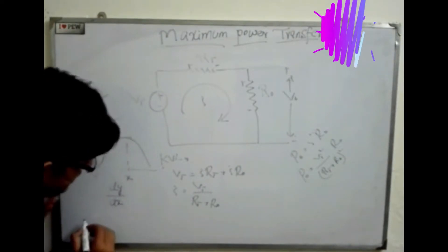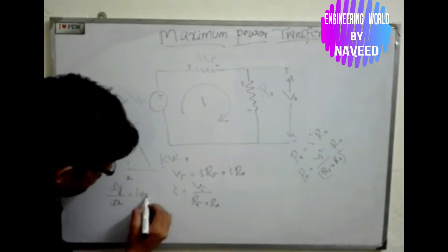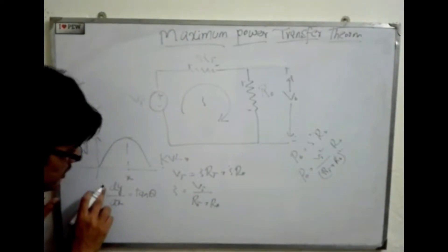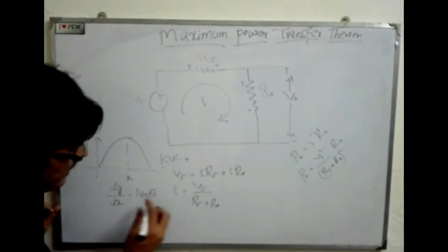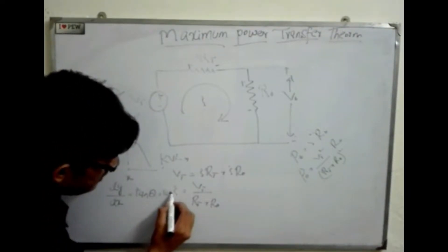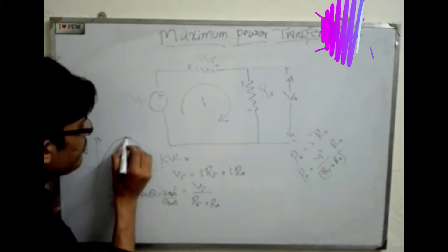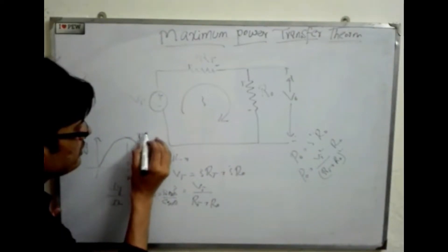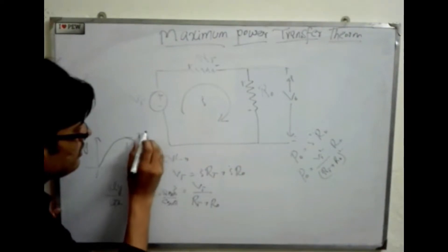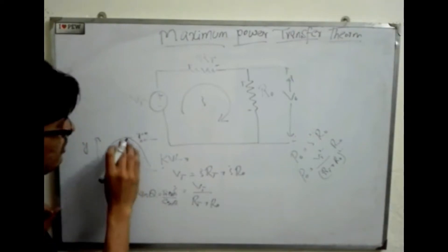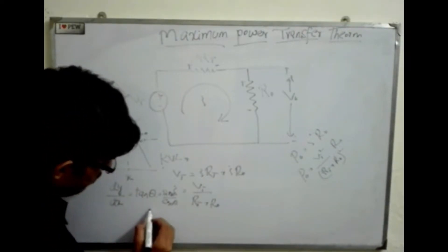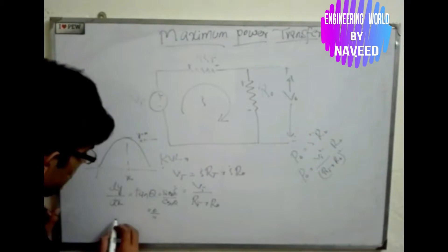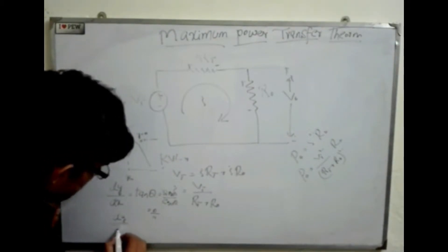The derivative dy/dx is equal to tangent theta, because tangent is equal to the perpendicular divided by the base, and also equals sin theta divided by cos theta. At the maximum point, we have a horizontal tangent, so the y-component is 0 and x-axis has some finite value. Therefore sin theta — or dy/dx — equals zero.